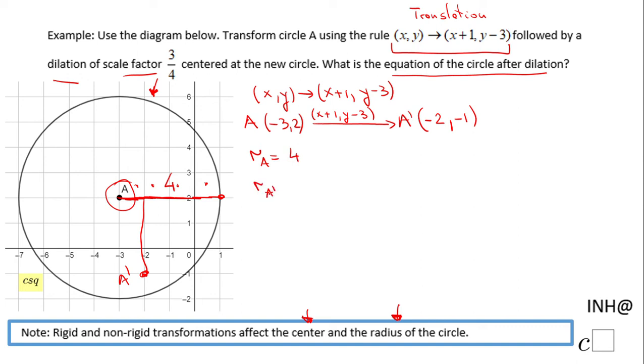The radius of the new circle, which I'm going to call r_A', will be 3/4 of this radius. Why? Because we notice this scale factor of 3/4. And this one can be simplified and we end up with 3.